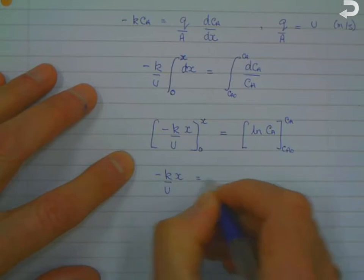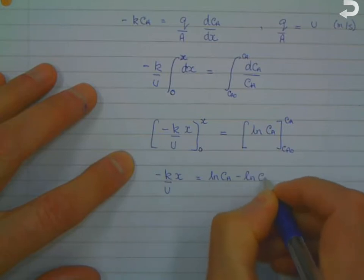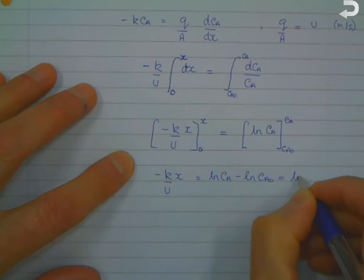And then we get that minus K over U times x is equal to log of CA minus log CA0, which is log CA over CA0.